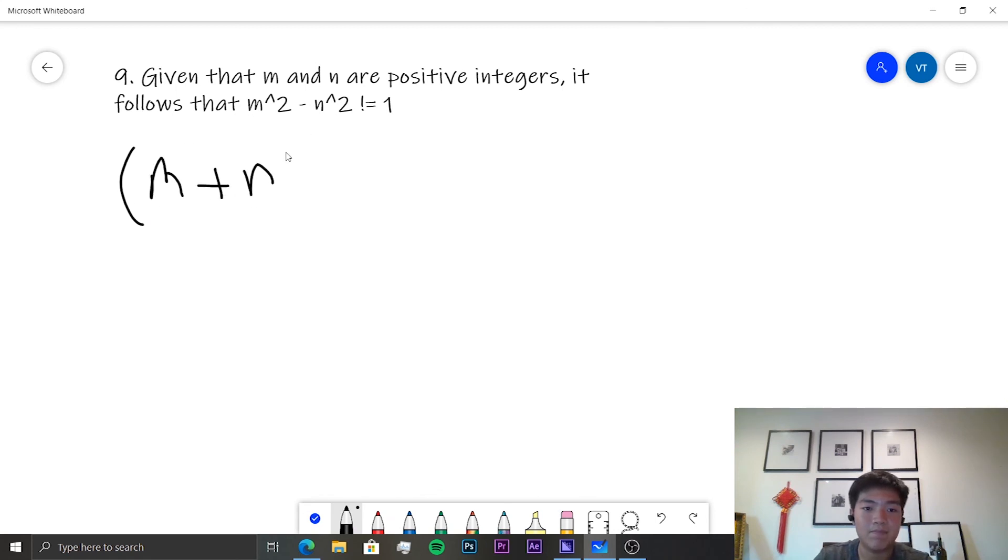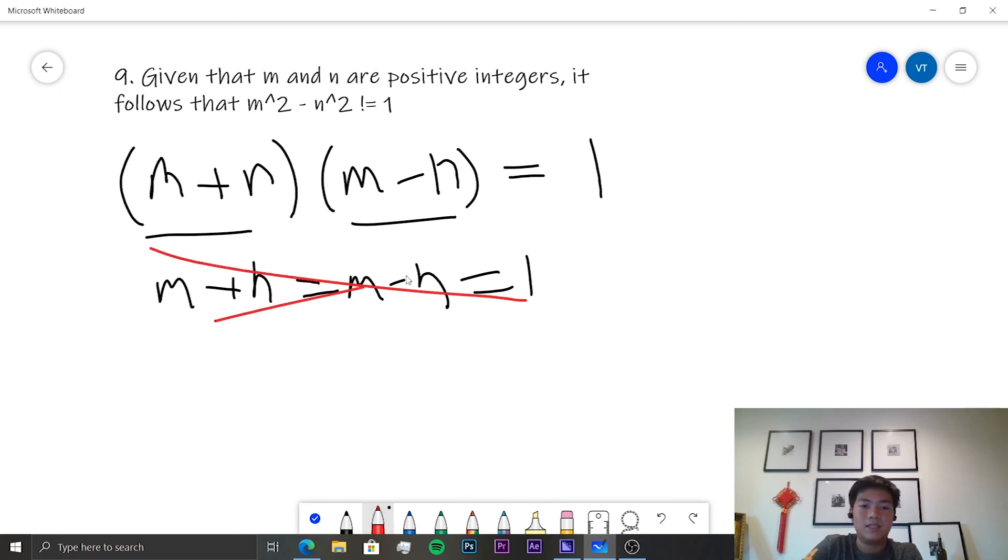That means m plus n times m minus n is equal to 1. Now, there's already a fallacy here. If we assume that m and n are integers, this means that these two must also be integers. And so there is no way that m plus n is equal to m minus n is equal to 1 if m and n are both positive integers. I mean, it is true if n is equal to 0, but that's not the case for counting. And so this is the final proof by contradiction.